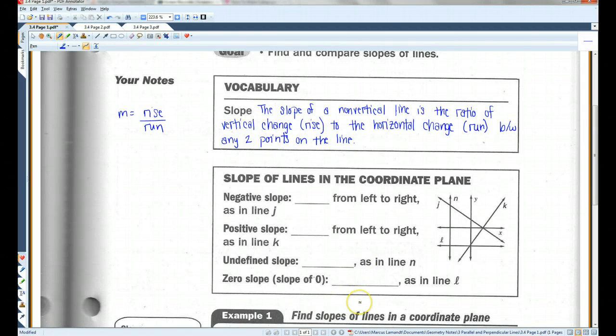If you have a negative slope, the line is going to fall from left to right, as in line J. This has a negative slope. If the slope is positive, it rises from left to right, like line K. This one has a positive slope.